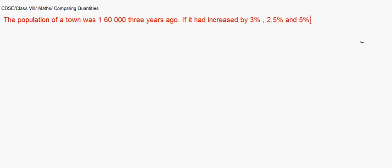This is where the rate of growth in various years are different. The population of a town was 1,60,000 three years ago. If it had increased by 3%, 2.5%, and 5% in the last three years, find the present population of the town.